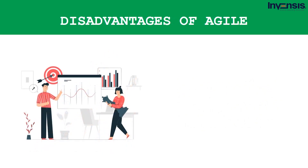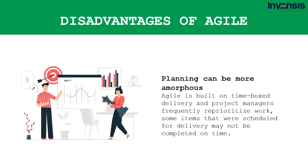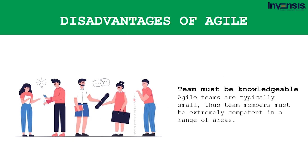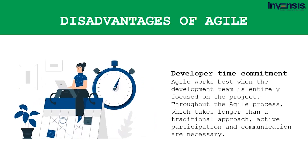Now let's look at the disadvantages of Agile. First, planning can be more amorphous — it's not always easy to nail down a firm delivery date. Because Agile is built on time-box delivery and project managers frequently reprioritize work, some items may not be completed on time, and additional sprints can lengthen the overall duration. Second, the team must be knowledgeable — Agile teams are typically small, so members must be extremely competent in a range of areas and comfortable with the adopted methodology. Third, developer time commitment is significant, as Agile works best when the development team is entirely focused on the project throughout the process.